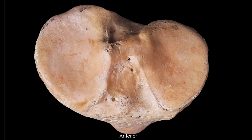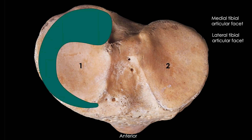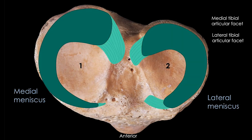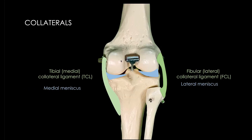Looking at the superior surface for more clarification: on the medial tibial articulating facet and the lateral articulating facet, you can see the large C-shaped medial meniscus and the lateral meniscus. These menisci are fixed in place between the intercondylar eminence by the anterior and posterior horns of the menisci. With both menisci and the collateral ligaments visible together, we can appreciate their combined arrangement.